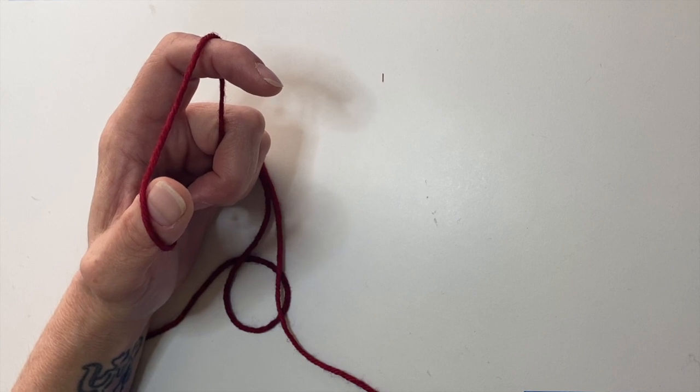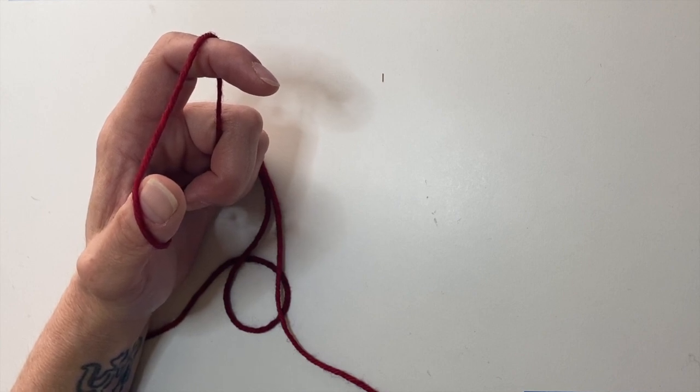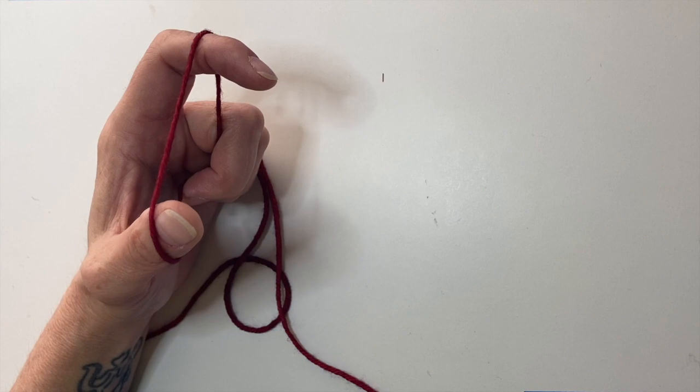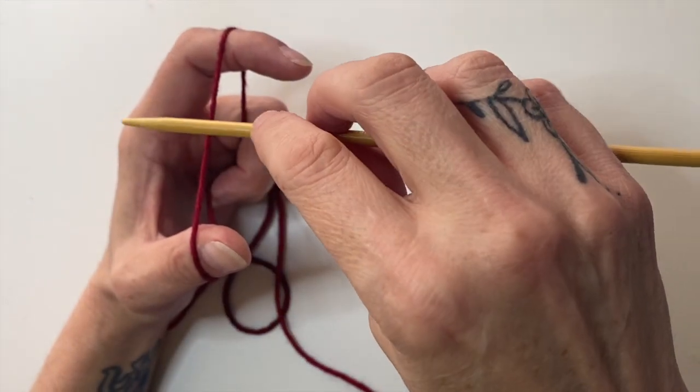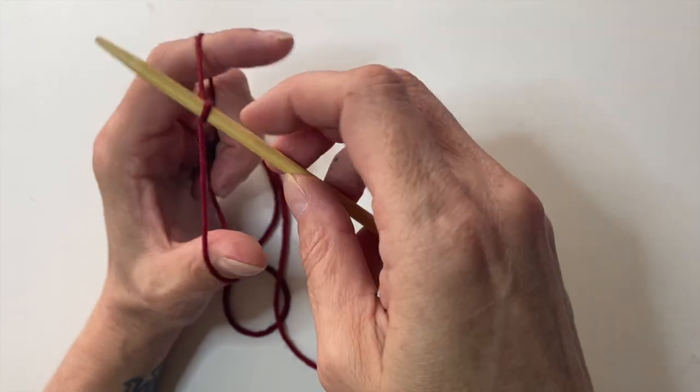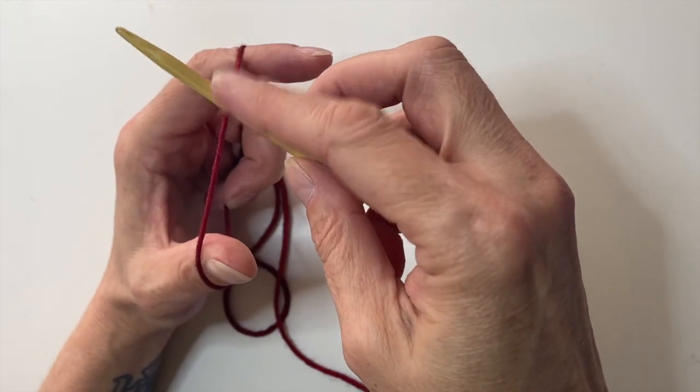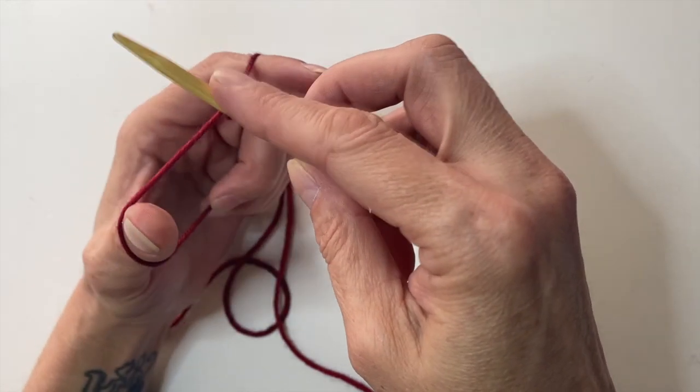I want to show you the German Twisted Cast On. It's very similar to the long tail or slingshot method. You can start with a slipknot or you can simply put your needle on top and scoop around to make a loop and hold your finger on top of that.